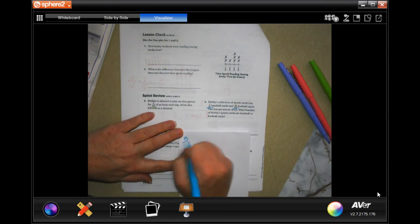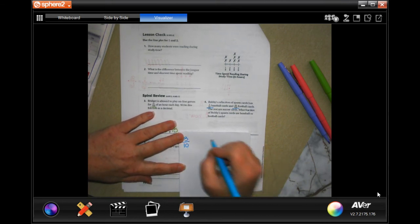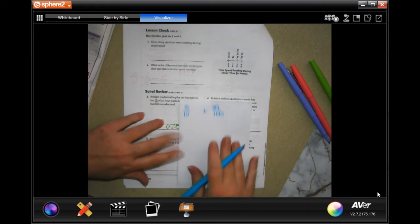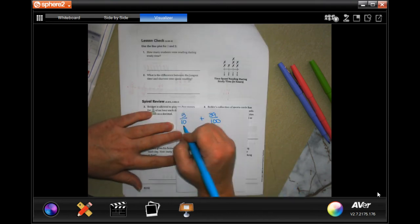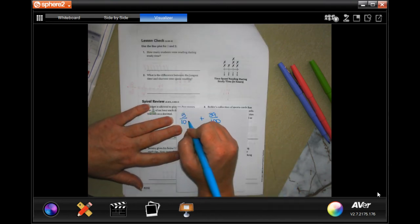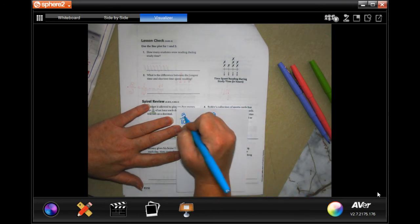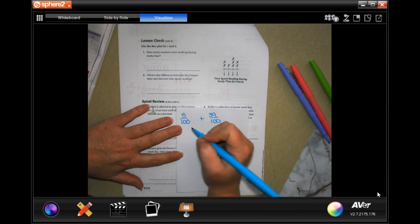Okay, so first I need to have the same denominator. The smallest number that 10 and 100 both go into is going to be 100. In order to get 10 to 100, I multiply it by 10 which adds a zero.